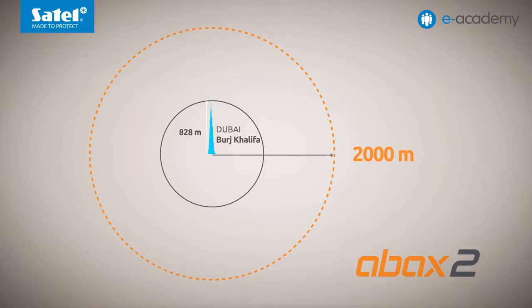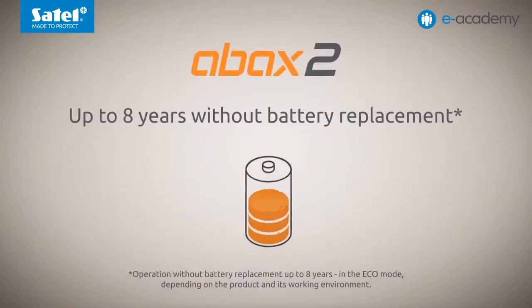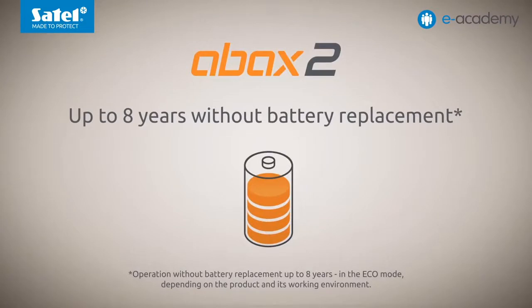That is more than twice the height of Burj Khalifa in Dubai, which is currently the tallest building in the world. Another characteristic feature of the ABACS 2 system is the long operation of the battery-powered devices. Advanced mechanisms of energy saving, as well as the Eco mode option, enable long operation of these devices without battery replacement for up to eight years, depending on the product and its configuration.